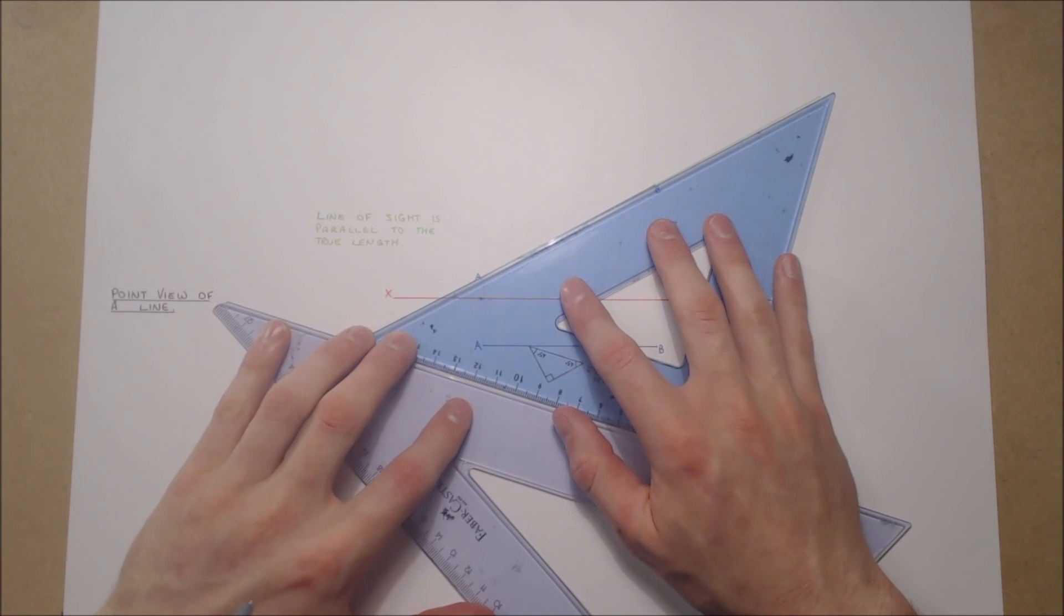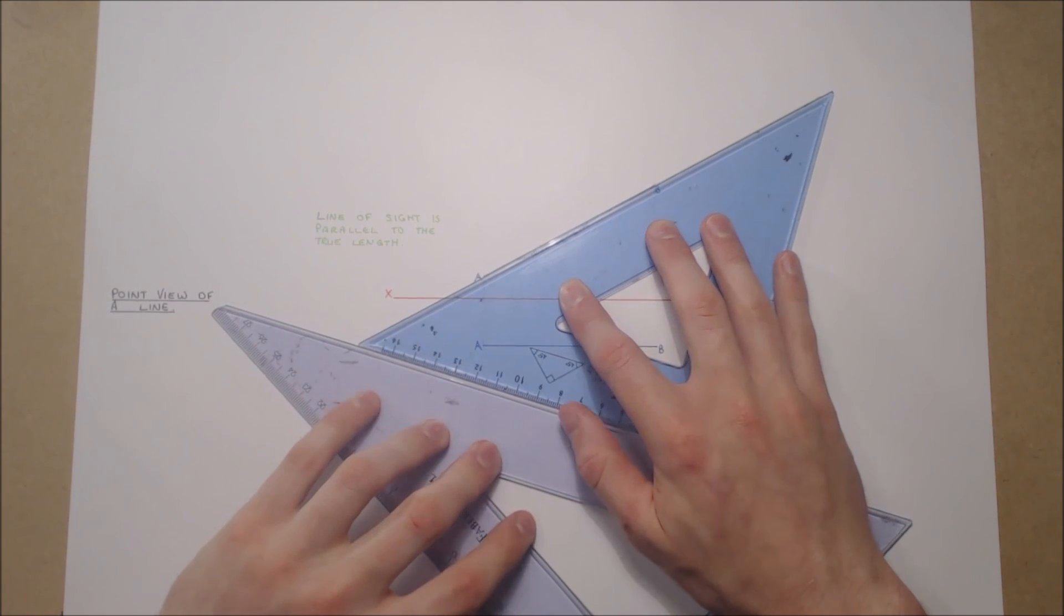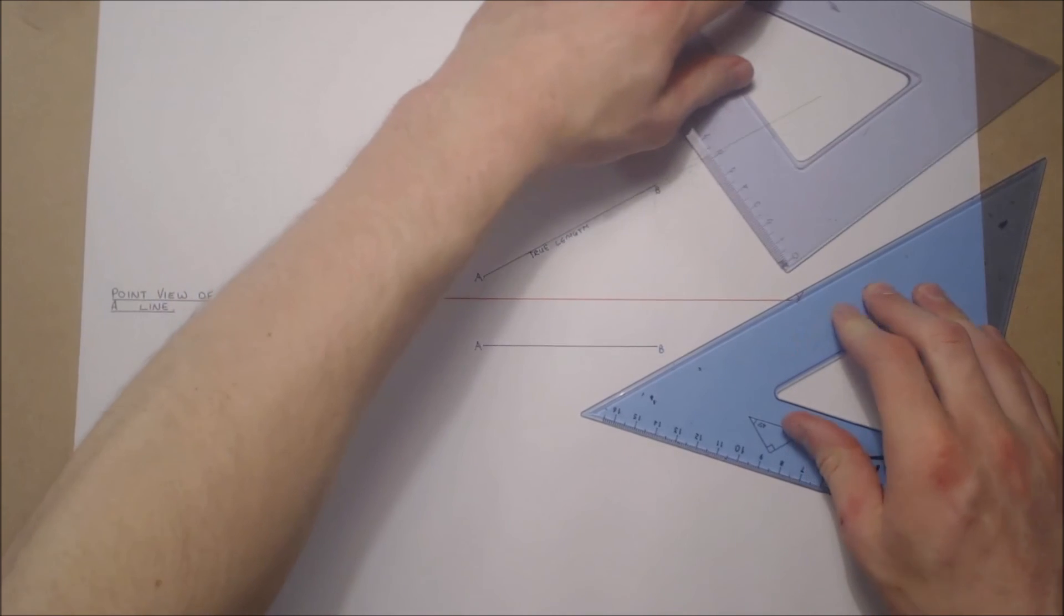Our projection plane is called our X1Y1 because it is our first auxiliary view.